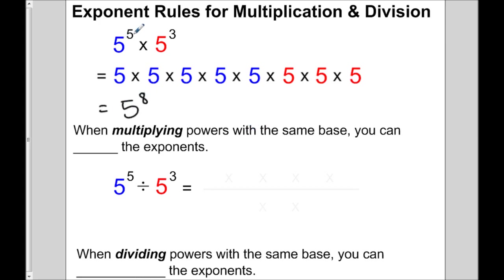If you notice, at the beginning we had a 5 and a 3 as exponents, and at the end we have an 8. Well, 5 plus 3 gives me 8. We're basically putting these five 5s and these three 5s together to make 8 of them. So when we're multiplying powers that have the same base, we can add the exponents as a shortcut.